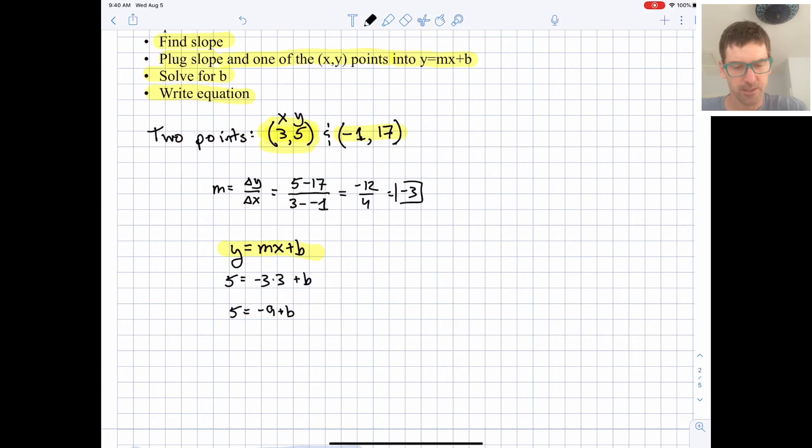And we just need to figure out what b is. 5 equals negative 9 plus b, we could add 9 to both sides, 14 equals b.